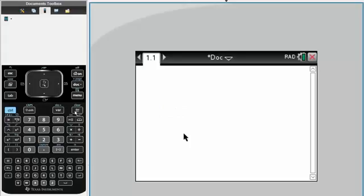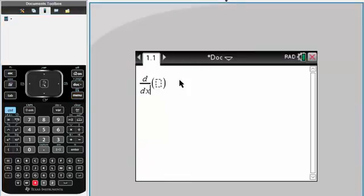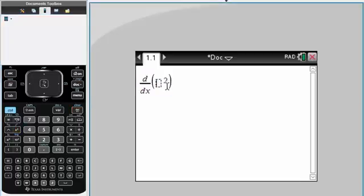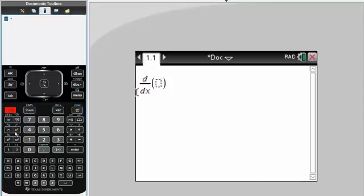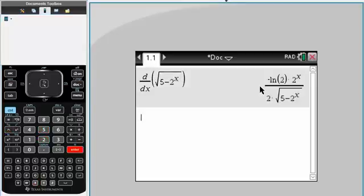Okay, so let's get started. First, we will get the derivative of f of x. So for us, we had the square root of 5 minus 2 exponent x, and so this is the derivative of f of x.